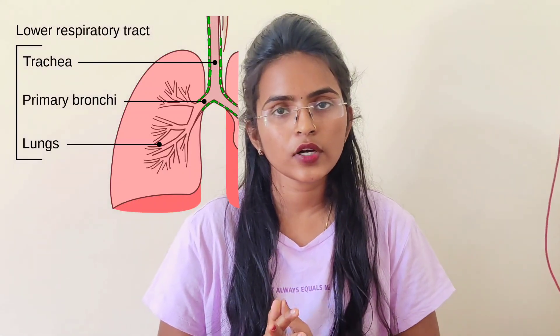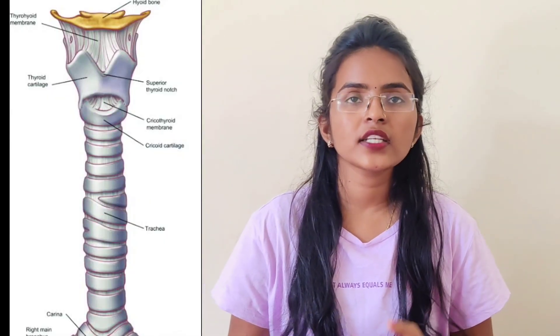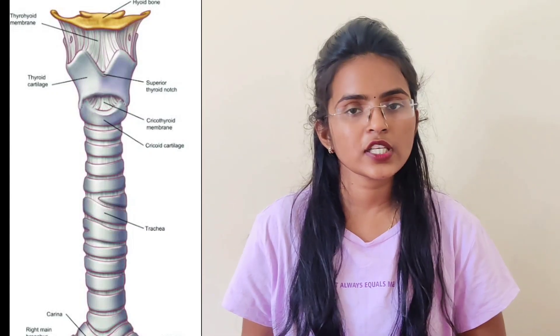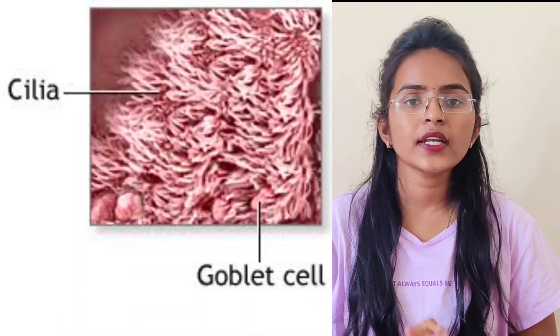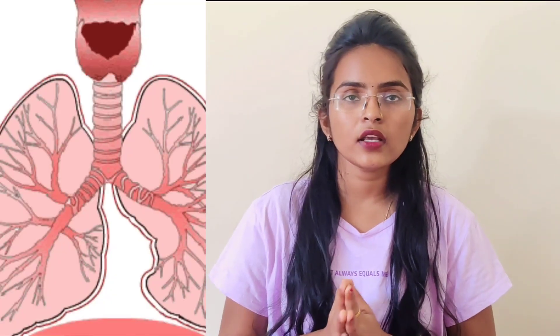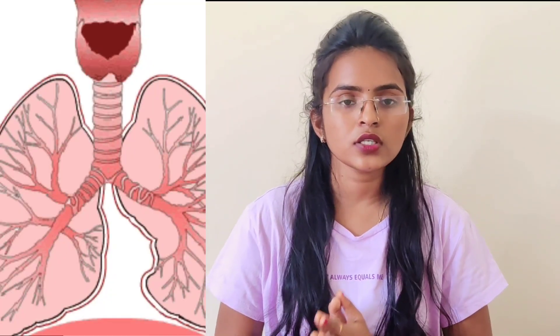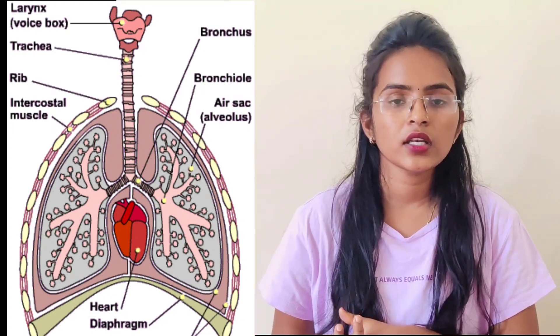It includes the alveoli. The organs of the lower respiratory tract are located inside the chest cavity. The trachea is located just below the larynx and is the main airway of the lower respiratory tract. It is also known as the windpipe and has tiny hairs called cilia. It branches into the bronchi, which are two tubes that carry air into each lung. The next part is the bronchi, which supply air to the lungs.